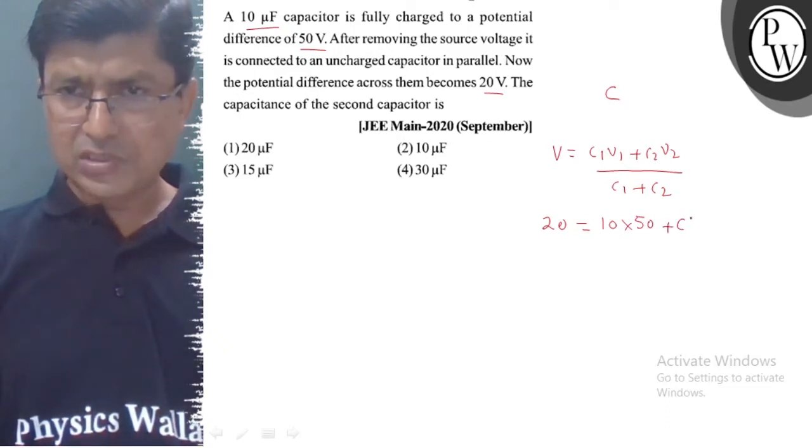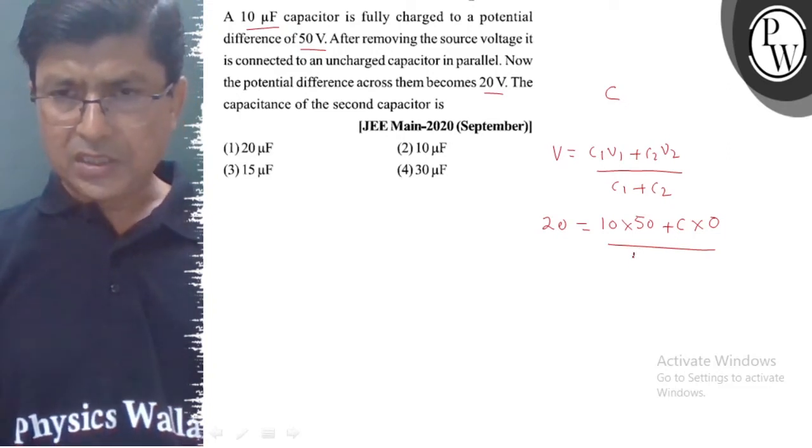C2 value is C and V2 value is 0. This gives us 20 equals 10 times 50 upon 10 plus C.